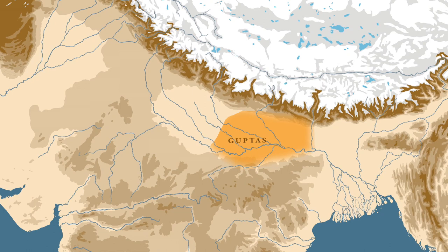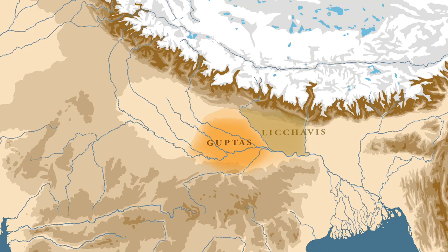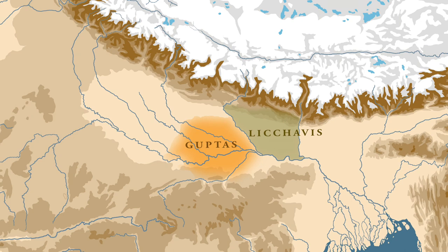With the accession of Samudragupta, we see that the Gupta territory had significantly increased in size. This was because Samudragupta inherited territory from his father Chandragupta and also the Lichavi territory from his mother's side, whose name was Kumardevi.